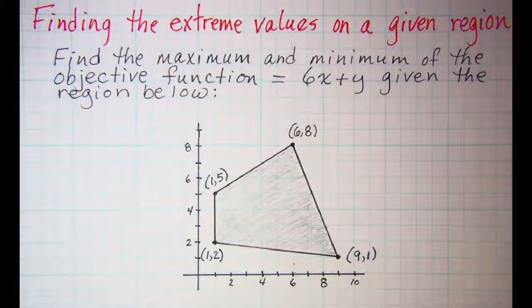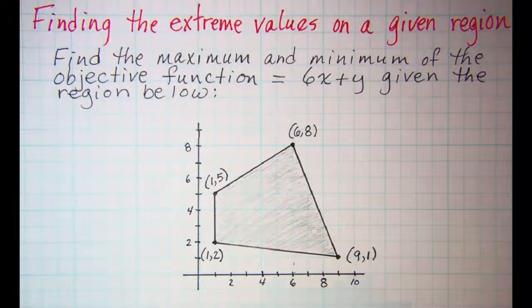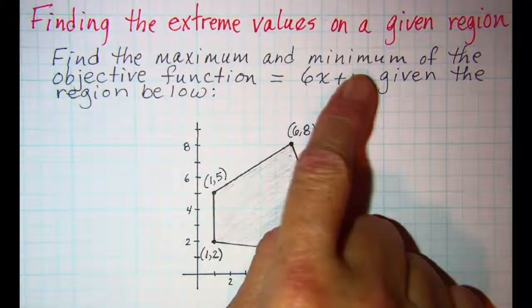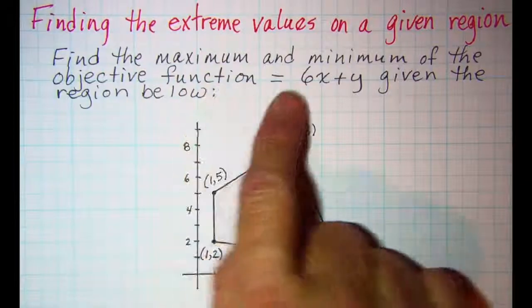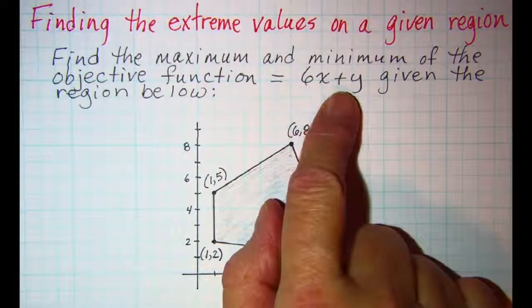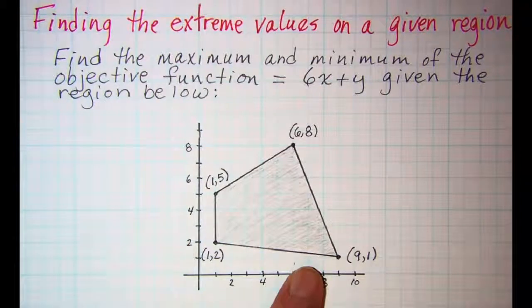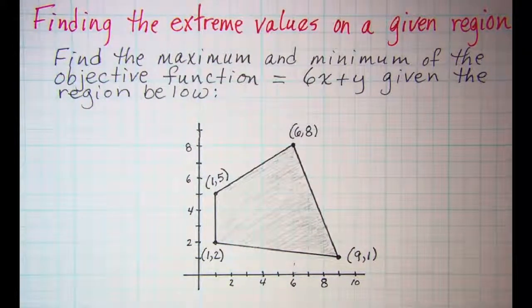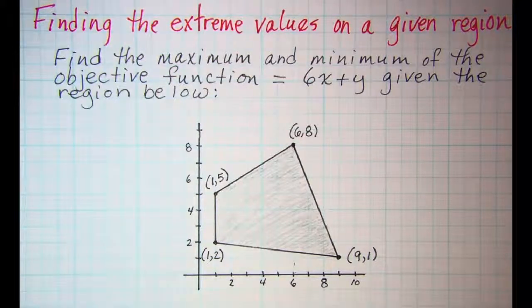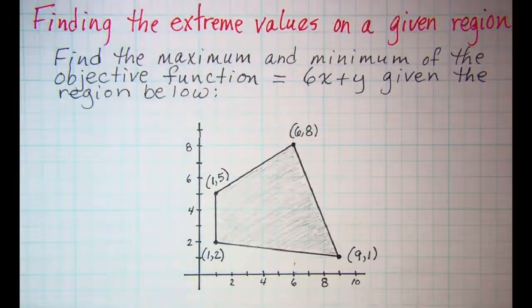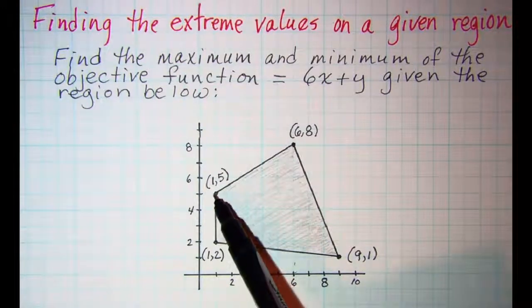In this video we'll be finding the extreme values on a given region. We're asked to find the maximum and minimum of the objective function 6x plus y given the region shown below. The maximum and minimum, which are the extreme values, will be found at the vertices of this polygon.